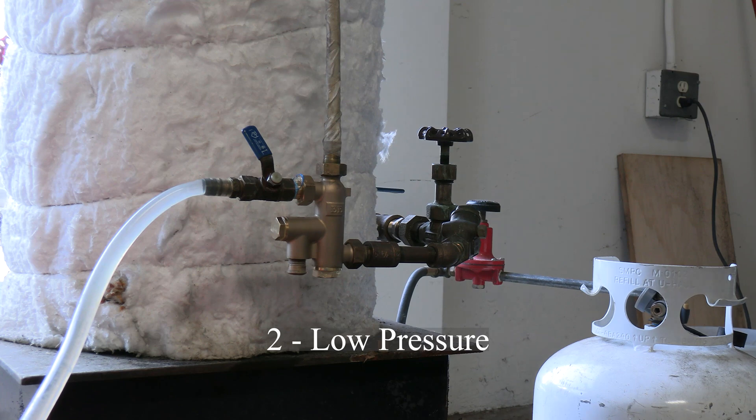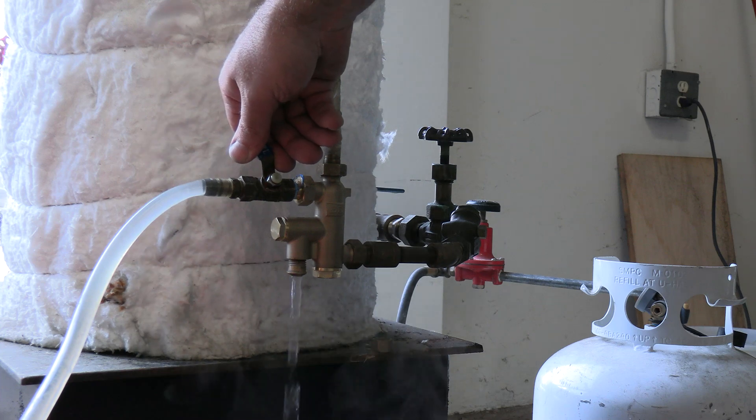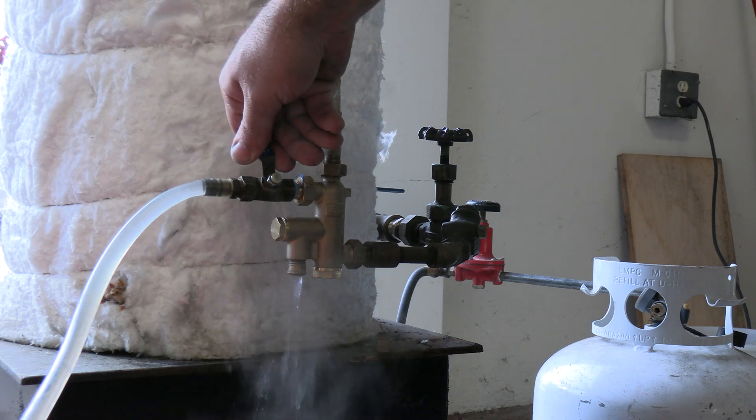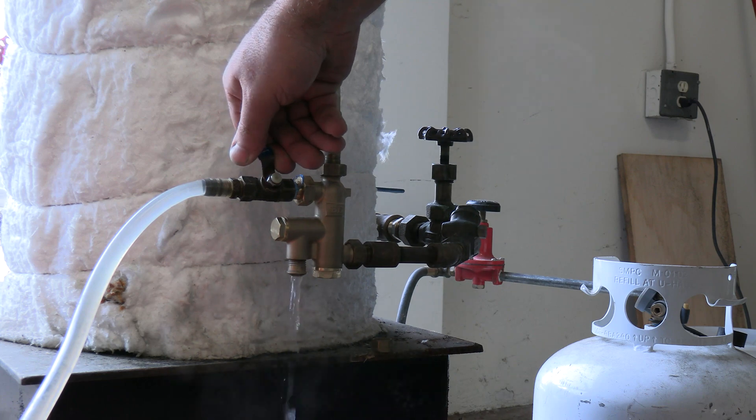Now we'll take a look at how the injector behaves when it's at the absolute bottom limit of its operating pressure. Everything appears to be normal, but as the water is cut back, it turns fairly quickly from a solid stream to a mix of water and steam.